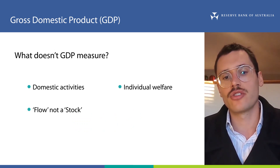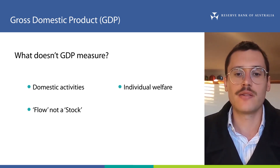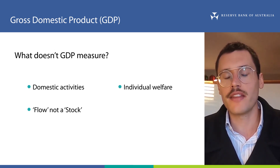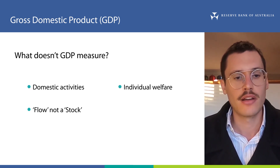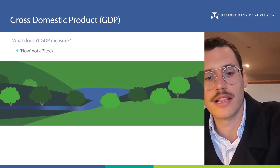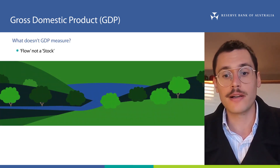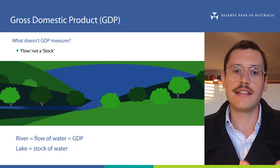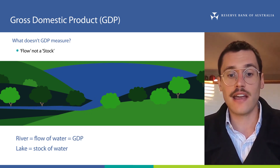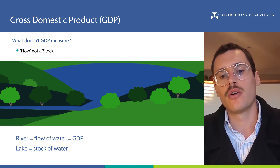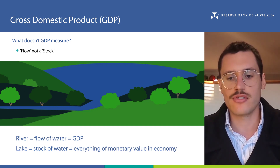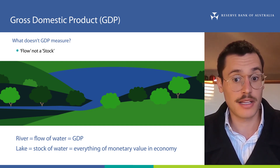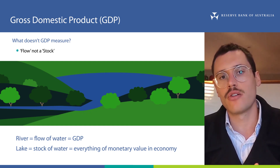Finally, GDP is a flow, not a stock, which means it sometimes measures things in ways you might not expect. Imagine a river supplying water to a lake — the river is the flow of water and the lake is the stock. GDP is comparable to the amount of water flowing through the river into the lake over a period of time. The water in the lake represents everything of monetary value that exists in the economy — all our possessions, homes, buildings, roads, and other assets. So GDP doesn't measure the size of the lake, nor any water that disappears from the lake.